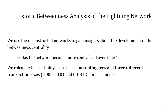We utilize our reconstructed Lightning Network at different points in time to measure the betweenness centrality, which provides us with insights on how it has developed over time — has it become more centralized or is the opposite the case? We calculated the betweenness centrality of each node based on the formula for routing fees and three different but realistic transaction sizes: 0.0001 Bitcoin, 0.01 Bitcoin, and 0.1 Bitcoin. By using different transaction sizes, we hoped to see some differences in the betweenness centrality among the nodes.